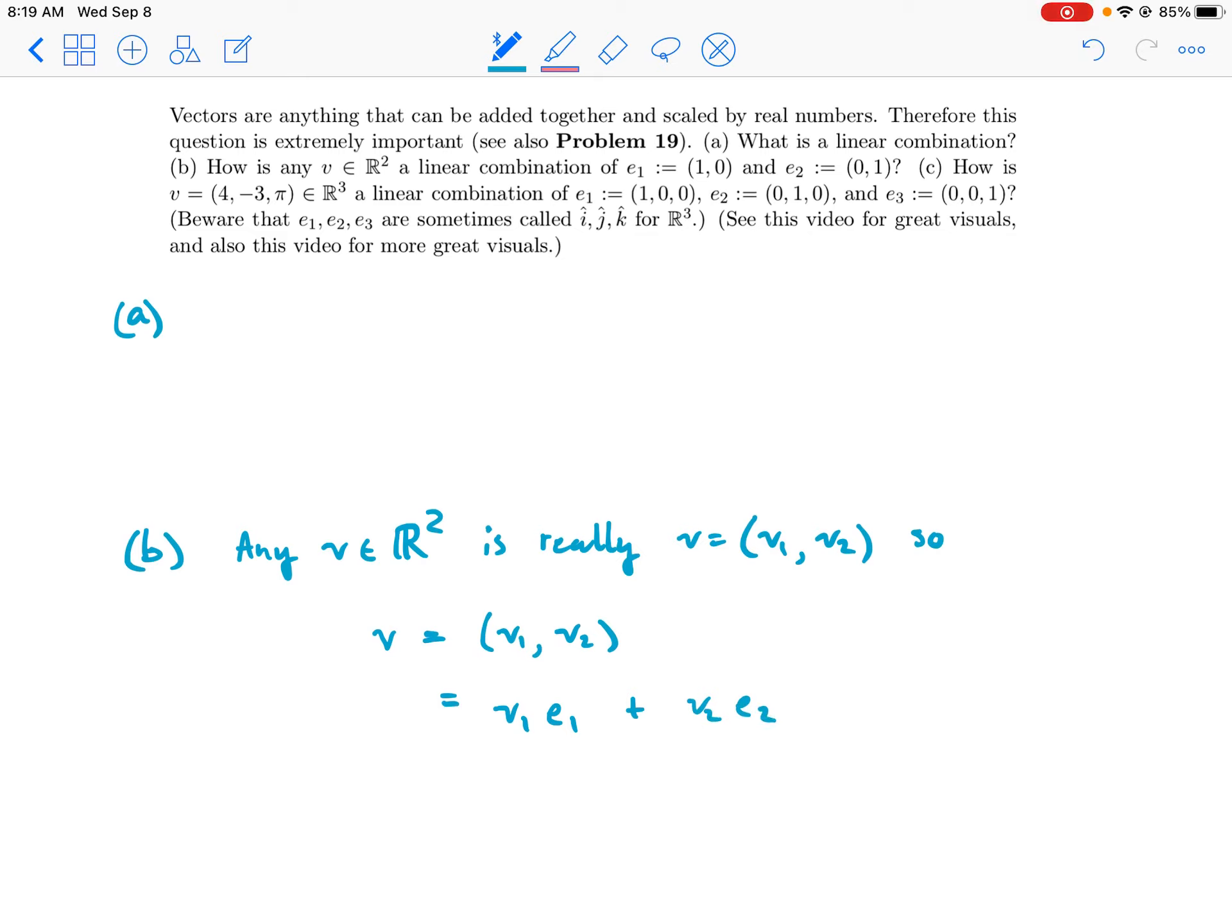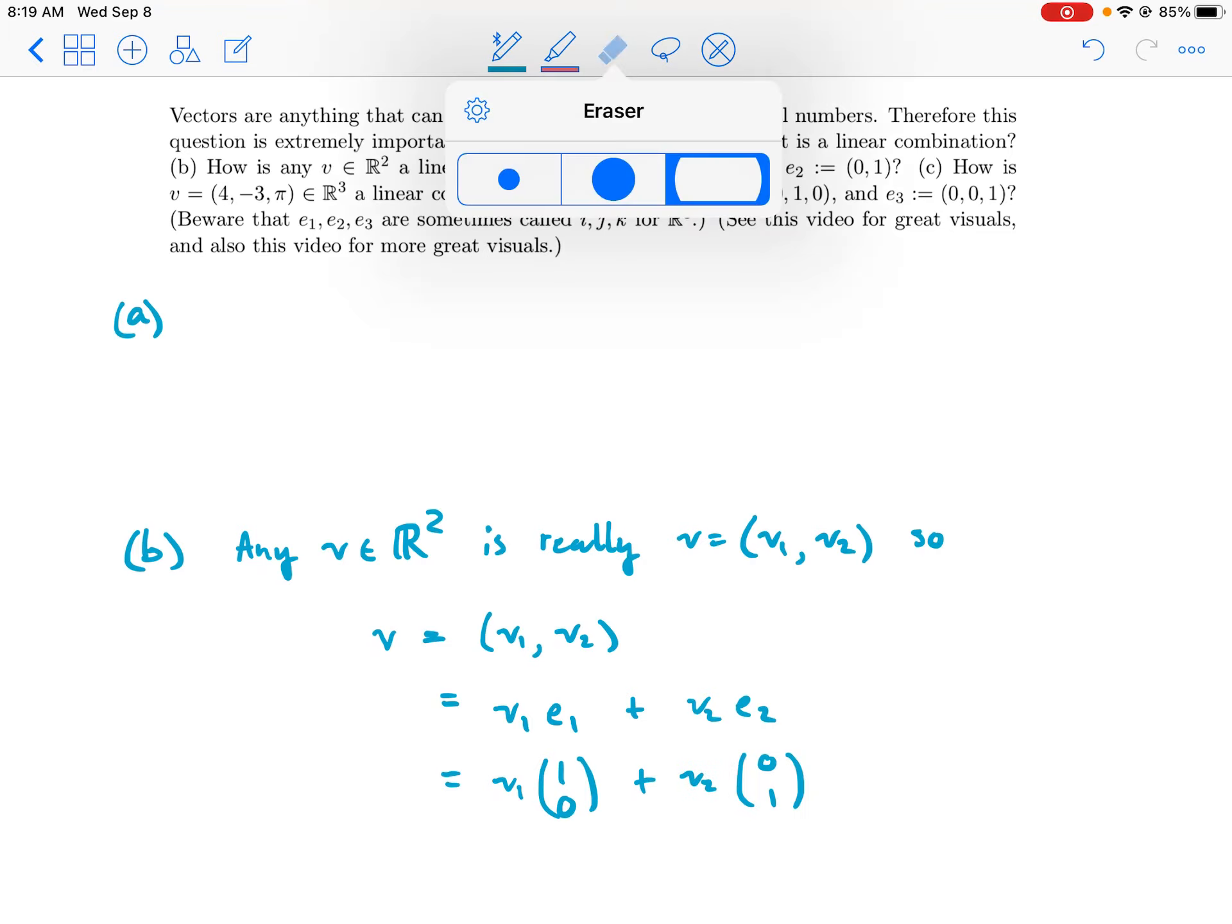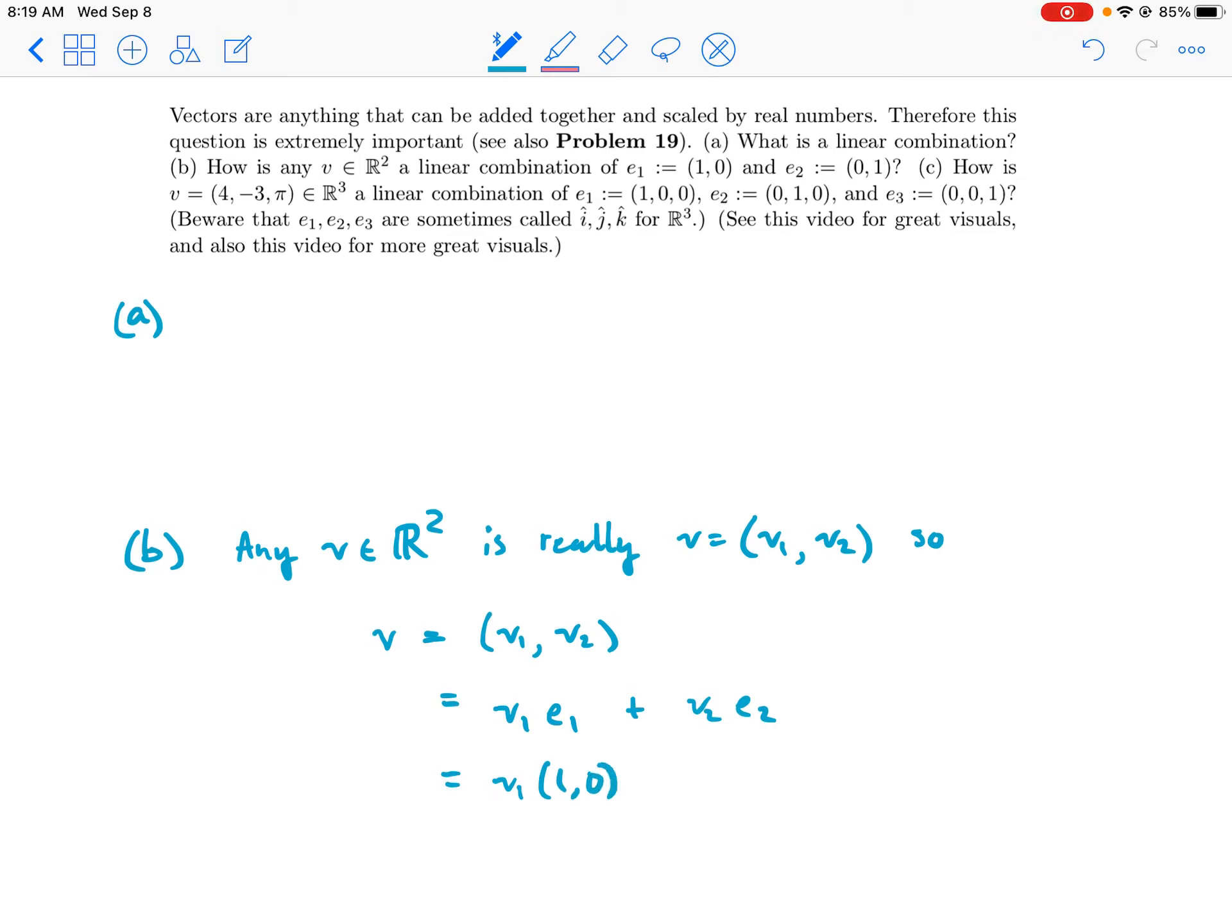Which is equal to v1 times e1 plus v2 times e2. And why is that? Well, because v1 is a number and e1 is this vector, and v2 is a number and e2 is this vector. We can write them as columns, but sometimes maybe it's better to write them as rows.